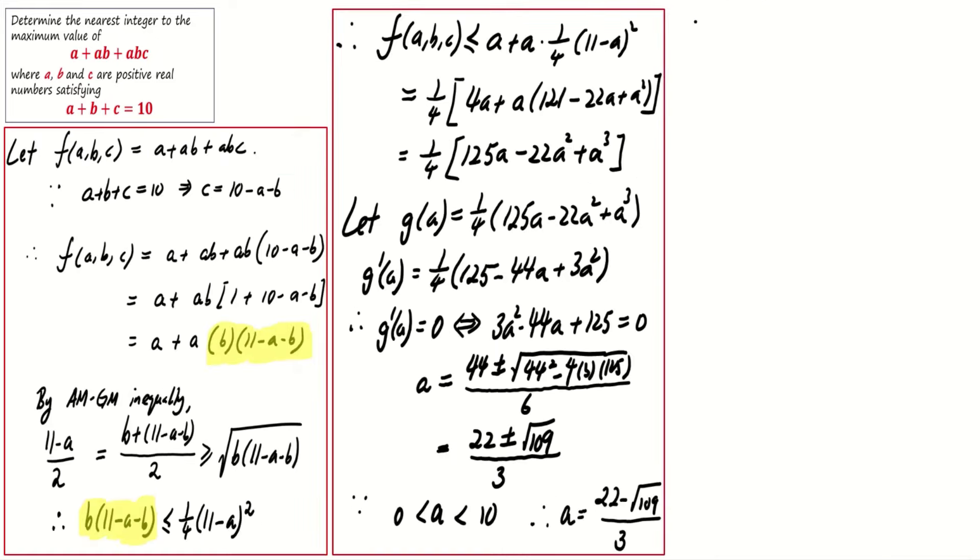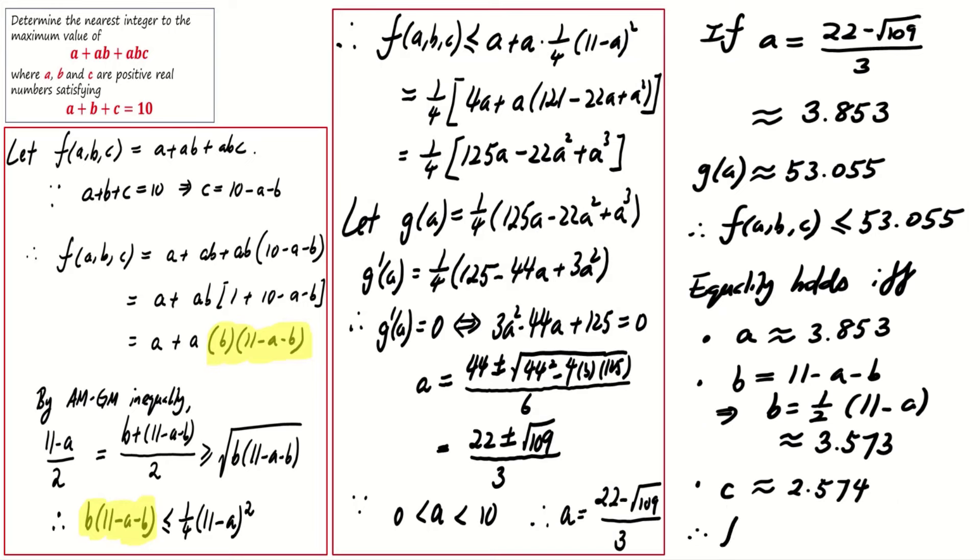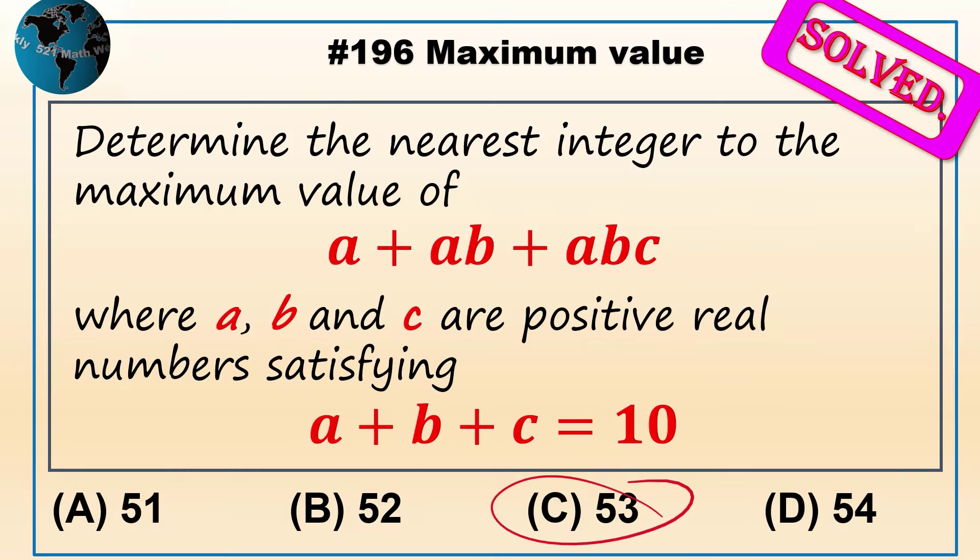This process confirms that the maximum value of f is approximately 53.055 and is achievable when a is approximately 3.853, b is calculated based on the AM-GM condition, and c is approximately 2.574. We confirm that the correct answer to our problem is c.